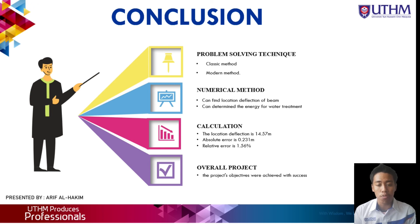For a simply supported beam, the Newton-Raphson method may be used to determine the maximum deflection point. If the force exceeds the limit, the object will collapse. The maximum deflection location for this project is 14.572 meters. Besides that, the absolute error is 0.231 meters, while the relative error is 1.56%. This is because the actual location is 14.81 meters.